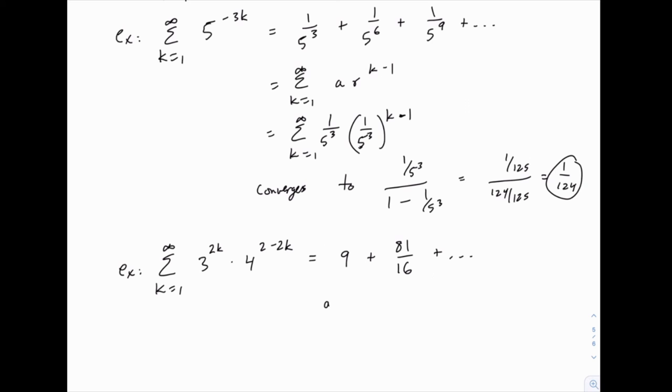But notice that we can pick out a equals 9 and r equals 9 sixteenths, because to get from 9 to 81 sixteenths you need to multiply by 9 over 16. So because r is less than 1, we know that this converges, and we know specifically it converges to a divided by 1 minus r. So 9 over 7 sixteenths, which if you simplify, if you care to do so, works out to 144 over 7.